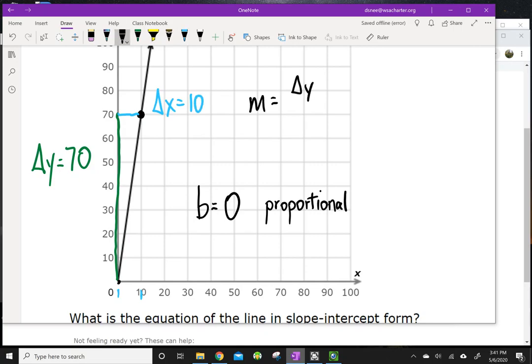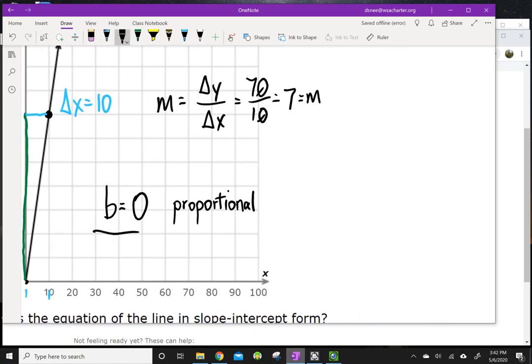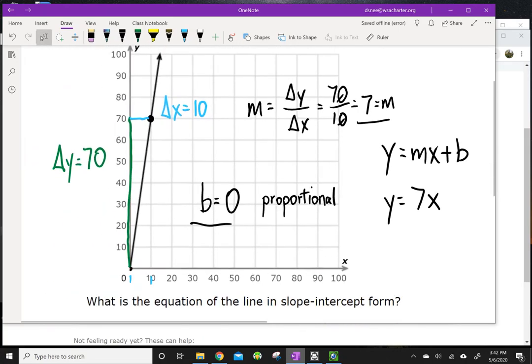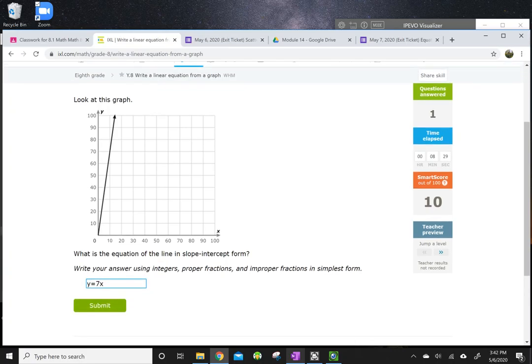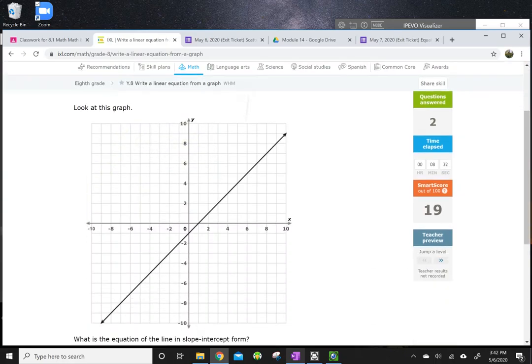So, my slope, m, is equal to change in y over change in x. So, it's 70 over 10. Which, if you type that into your calculator, or you just know, you can cancel those out. And 7 divided by 1 equals 7. So, that's the slope. And b equals 0. We found b was equal to 0. It went through the origin. M equals 7. And we're going to put those values in the equation. Y equals mx plus b. So, y equals 7x. That line has a positive slope. It starts low on the left and goes high on the right. So, y equals 7x. We're going to submit that. And we got that right.